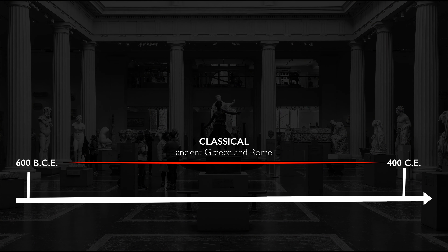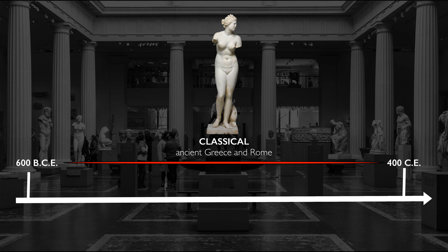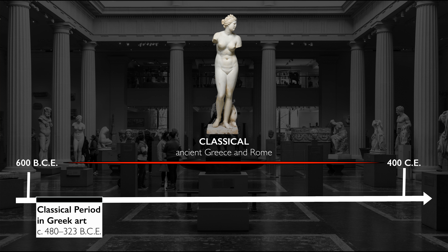So let's move on to 'classical.' That's usually a reference to ancient Greek and Roman culture — this period that lasted over a thousand years, in which much of the Mediterranean was dominated by first the Greeks and then the Romans. Here we are in the court showing lots of examples of Greco-Roman sculpture that would be considered classical. But more specifically, people talk about the classical period, which is a specific time period in ancient Greek art.